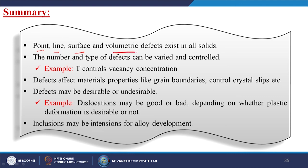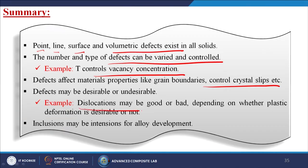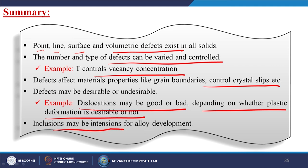In summary, this lecture covered point, line, surface, and volumetric defects which exist in all solids. The number and type of defects can be varied and controlled — for example, temperature controls vacancy concentration. Defects affect material properties: grain boundaries control crystal slip. Defects may be desirable or undesirable — they can improve or reduce material properties. Dislocations may be good or bad depending on whether plastic deformation is desirable. Inclusions may be intentional or unintentional in alloy development.